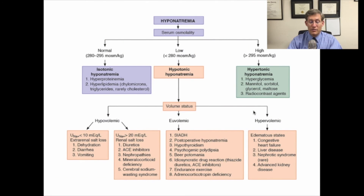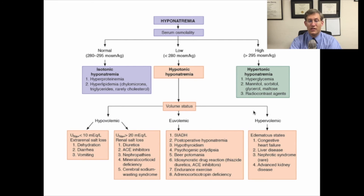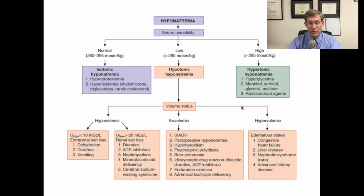To conclude, there really is a reasonable structured approach to hyponatremia. Start by checking serum osmolality, determining if it's low, normal, or high — most of the time it will be true hyposmolal hyponatremia. Then determine their volume status using clinical judgment to categorize into the three major categories: hypovolemic, euvolemic, and hypervolemic hyponatremia. Thanks again for watching.